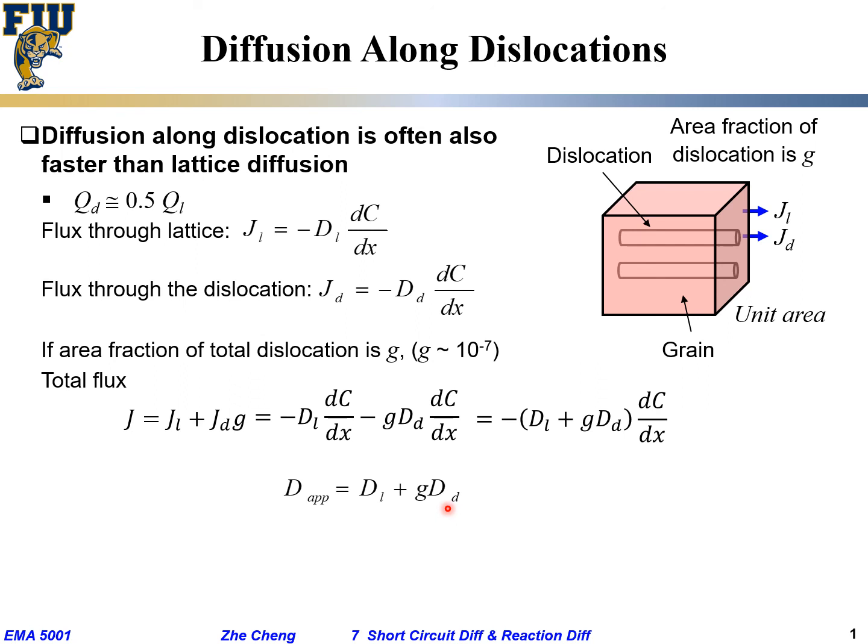But that dislocation contribution has to be modulated by what? By g, which means the area fraction of the dislocation. And of course we can rearrange and get a similar relationship.